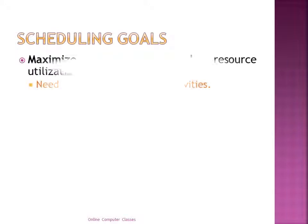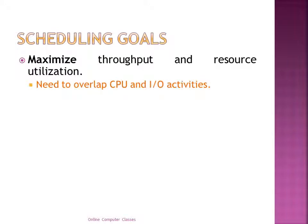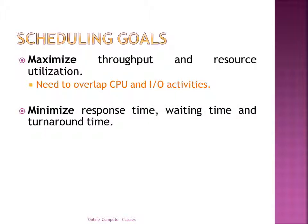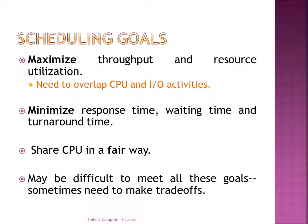The most important scheduling goal is maximum throughput and resource utilization. For this, it needs to overlap CPU and IO burst activities. The next important goals are minimum response time, minimum waiting time, and minimum turnaround time. The CPU should be shared in a fair way, though it may be difficult to meet all these goals and trade-offs sometimes need to be made.